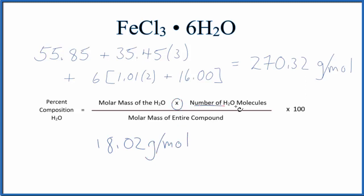We're going to multiply that by the number of water molecules. There are six separate water molecules around the FeCl3. So we're going to multiply that by six, and then we divide by the molar mass of the entire compound. That's what we found up here.